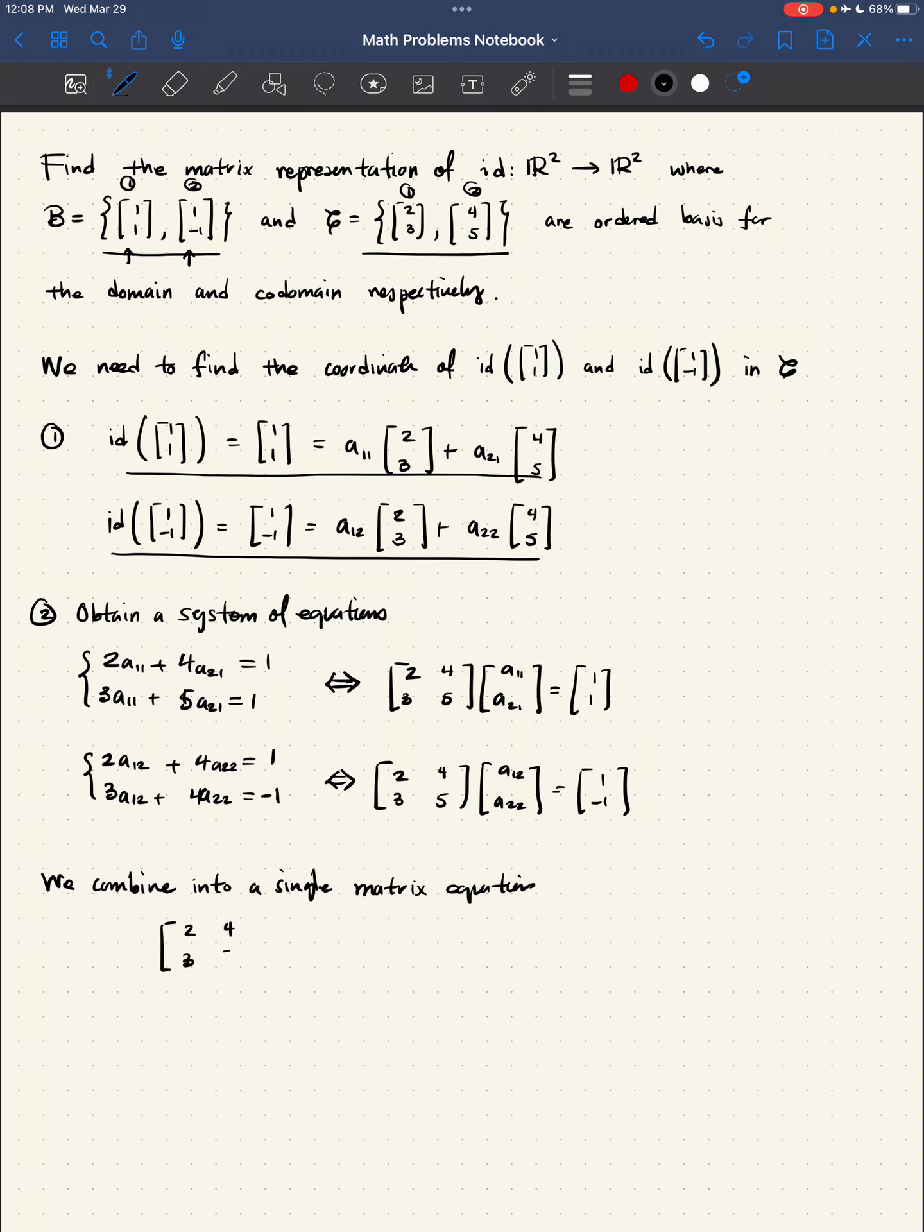[2,4; 3,5] times [a₁₁, a₁₂; a₂₁, a₂₂] would be equal to [1,1; 1,-1], the first column that we have here, and the second column that we have here. So look at the format of this equation. It has this form.